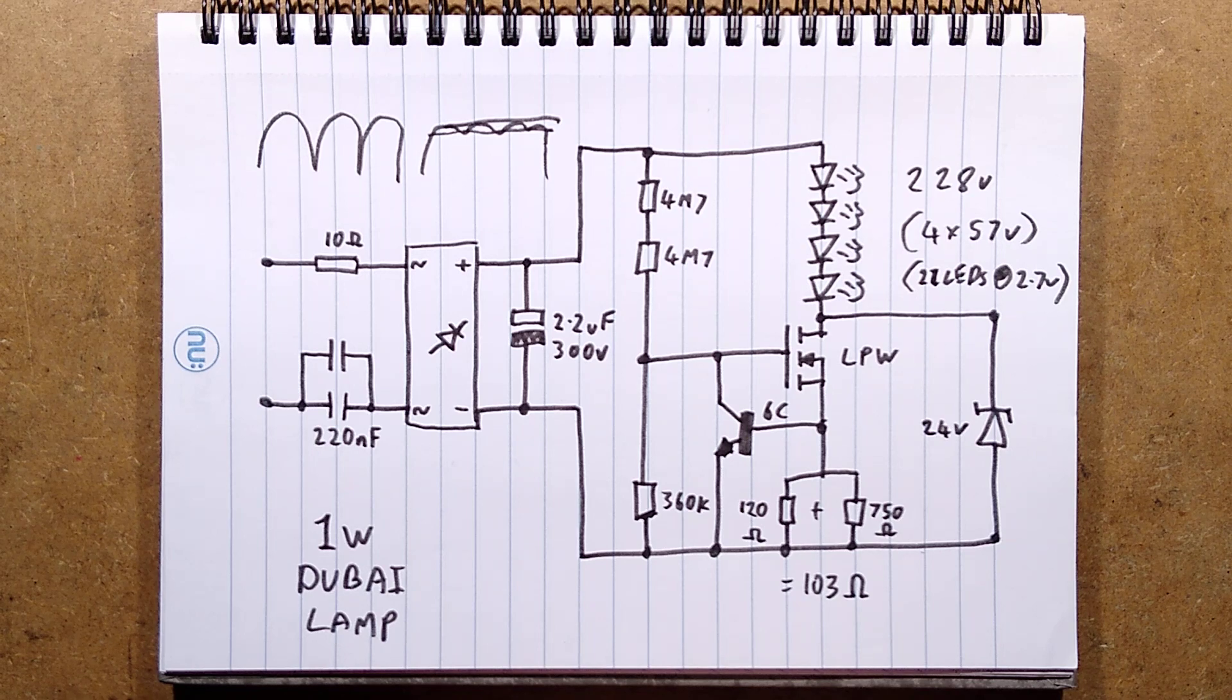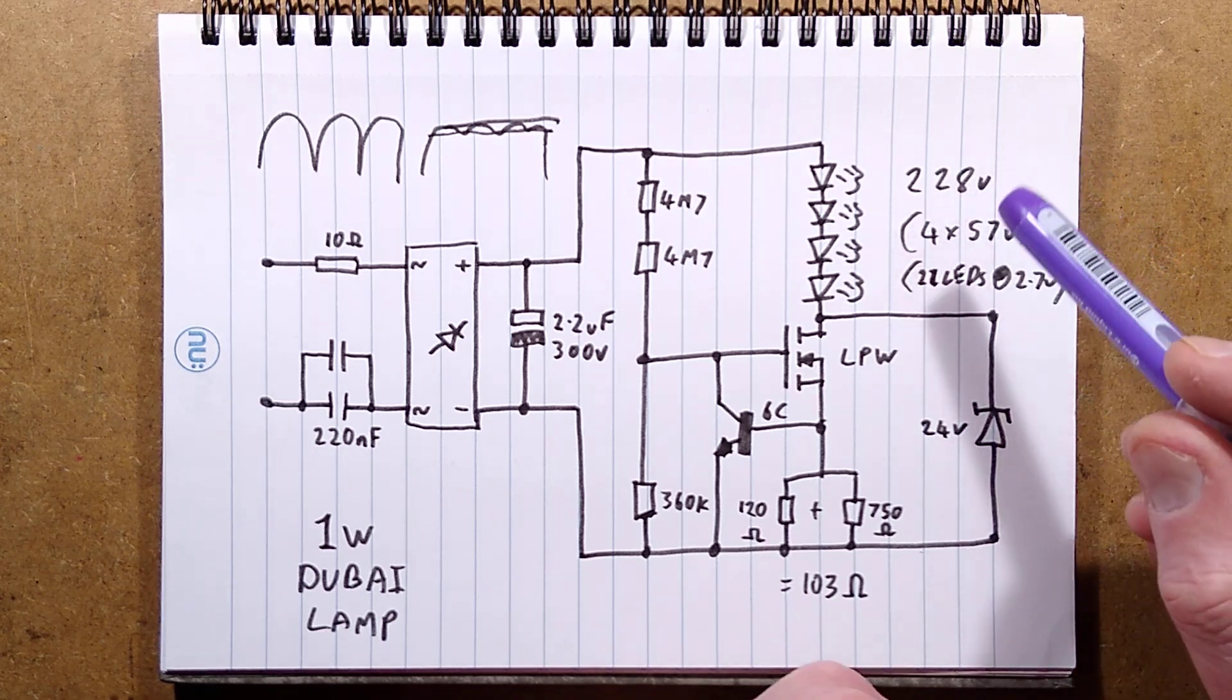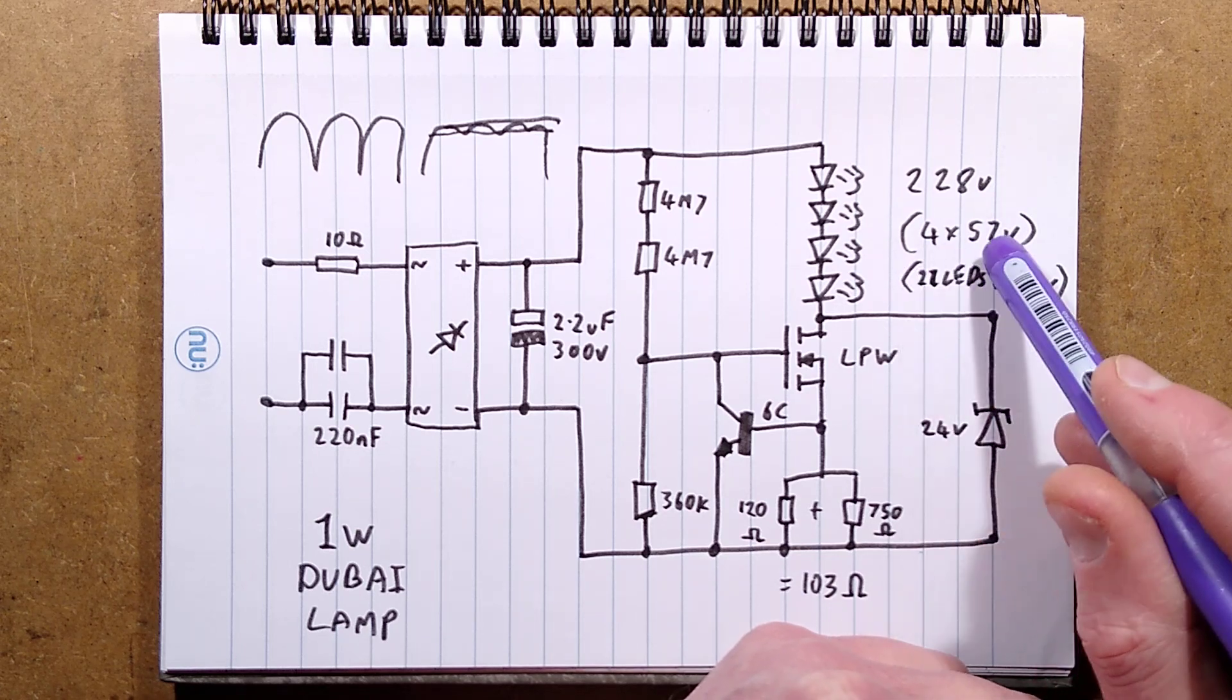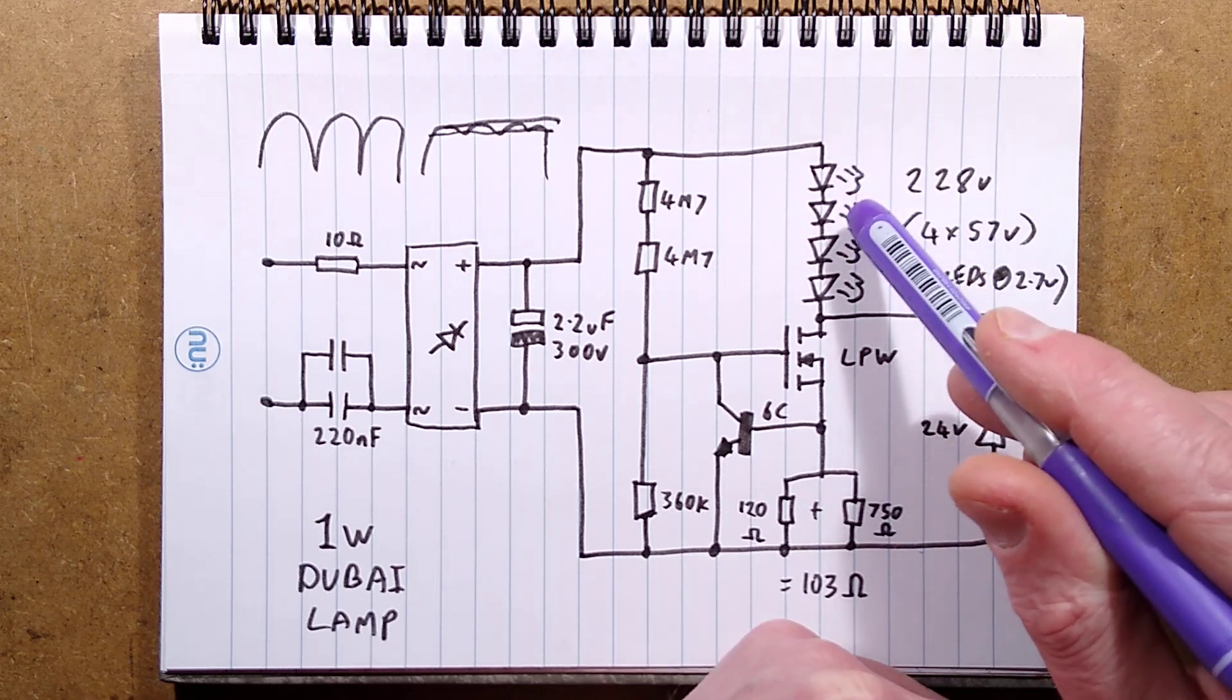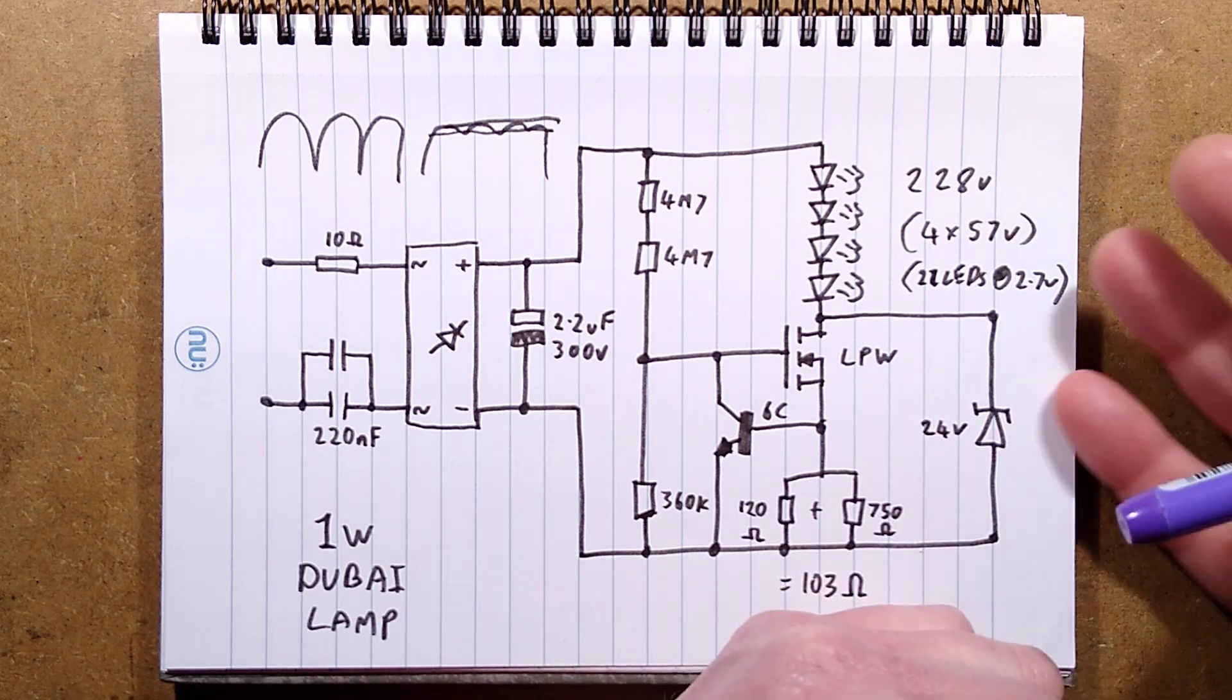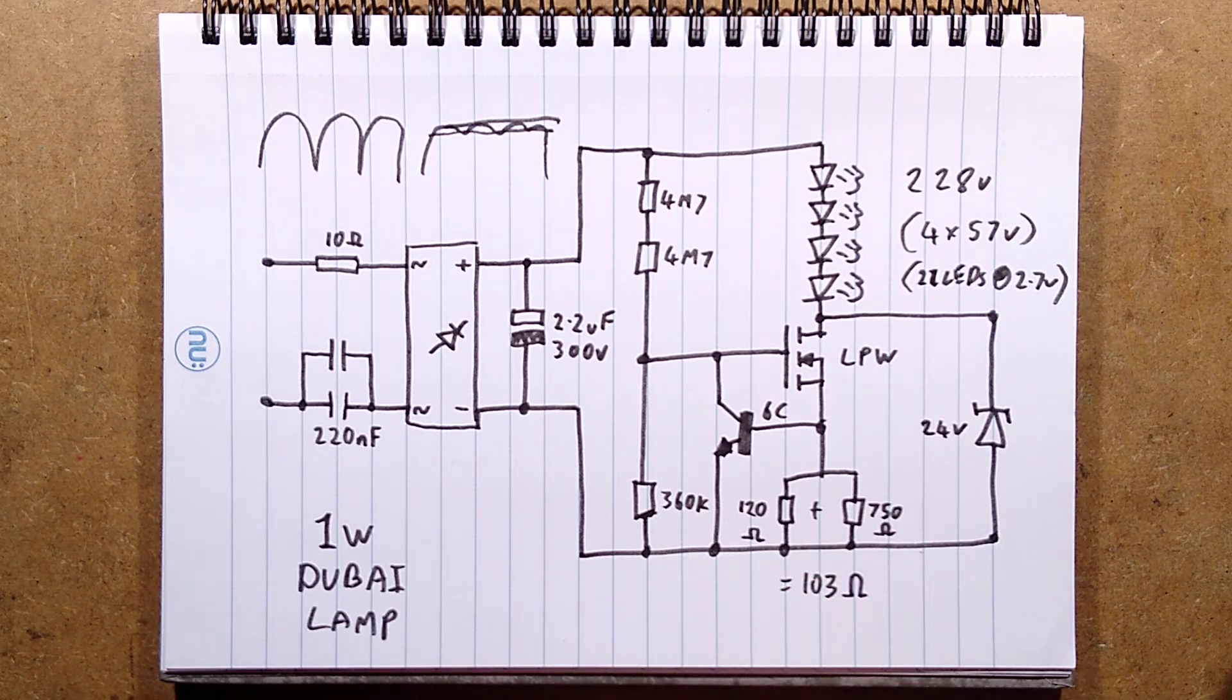The LED filaments—all four of them—are in series. They add up to 228 volts as you saw there. That's 4 times 57 volts with 57 volts per filament, and each one is 21 LEDs, which gives 2.7 volts per LED. That's typical of LEDs running at low current, and they are running at very low current.